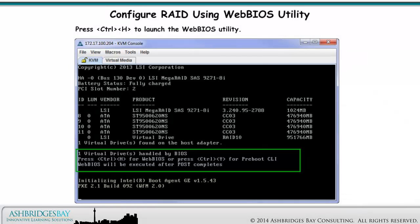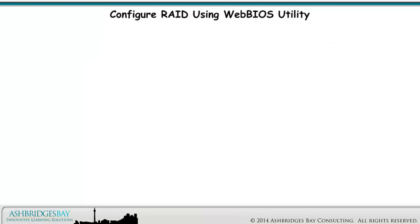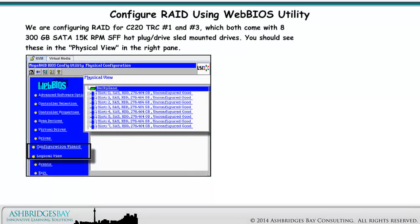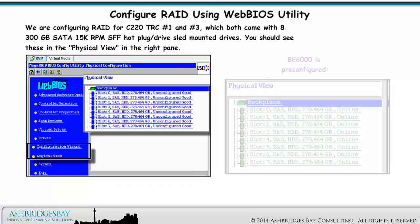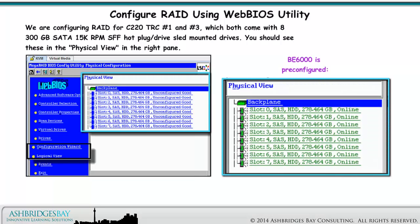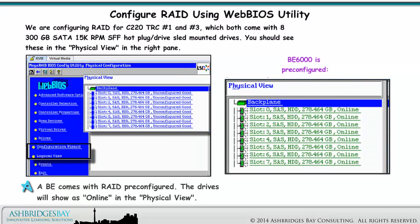Press CTRL-H to launch the Web BIOS Utility. We are configuring RAID for C220 TRC No. 1 and No. 3, which both come with eight 300GB SATA drives. You should see these in the physical view in the right pane. A BE comes with RAID pre-configured, and the drives will show as online in the physical view.